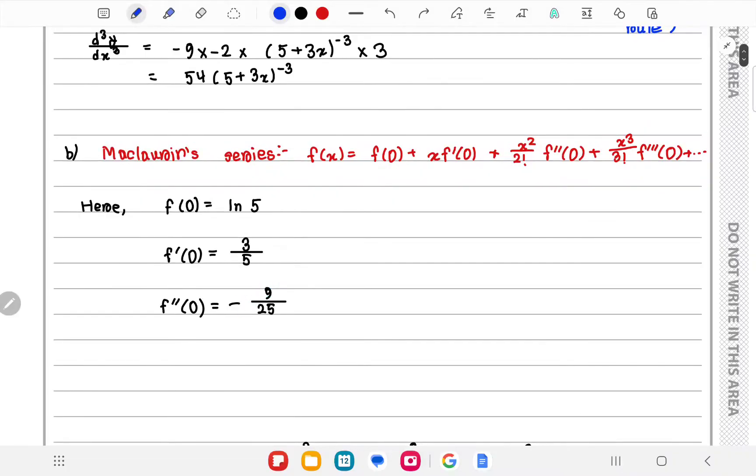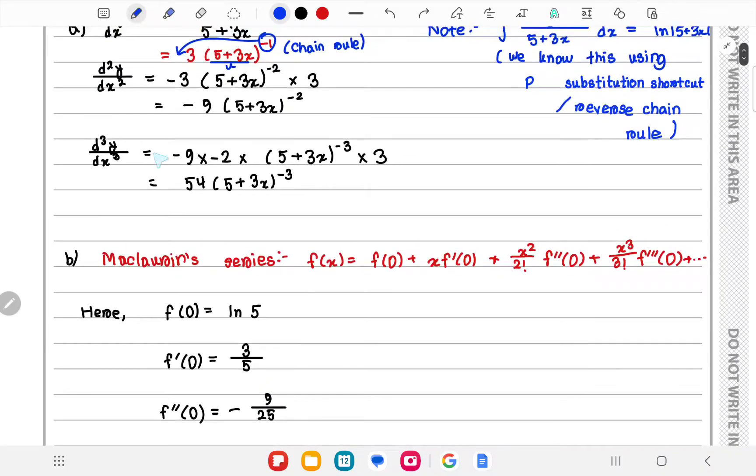You can just keep on writing it like that. And for f'''(0) we'd have to put 0 over here. You'll get 54 divided by 5³.